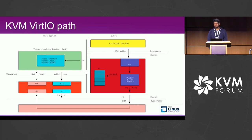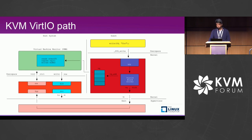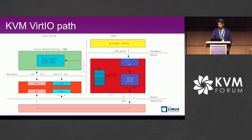This slide shows the basic sequence of events for a VirtIO transfer from the guest to the host. On the right side you can see the guest VM, and on the left the host VM, which has hosted the guest VM. A normal write syscall to FD eventually reaches the VirtIO block driver on the guest side. This driver prepares the data packets, puts them into the virtqueue, and sends a kick to the host kernel. When the kick is sent, the VM exits and control reaches the host kernel.